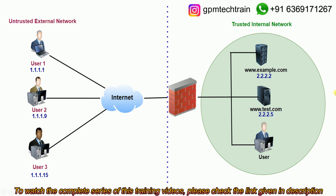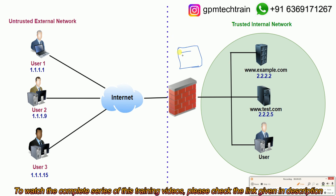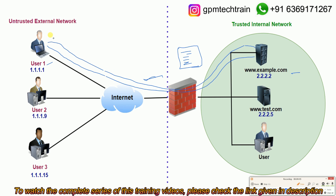The firewall maintains a security policy where all the security rules are defined. Whenever traffic arrives, the firewall looks at the security policy. For example, if user 1 wants to connect to example.com and the request hits the firewall, the firewall checks the security policy. If it is set to permit, then this traffic will be allowed to the destination, and a response from that application will be seen by the user.